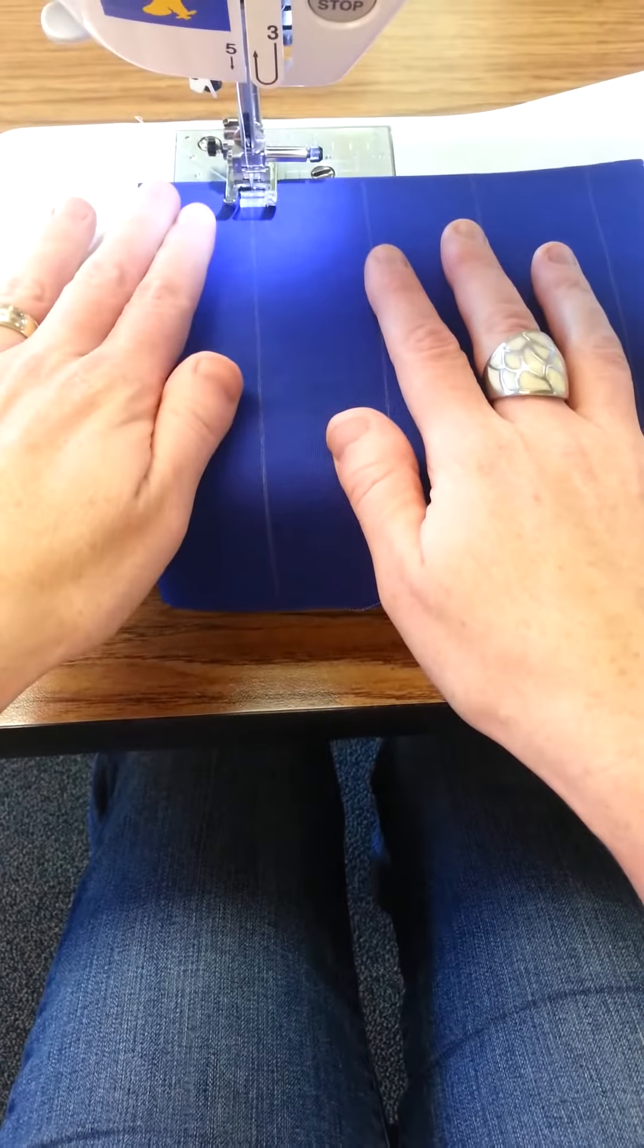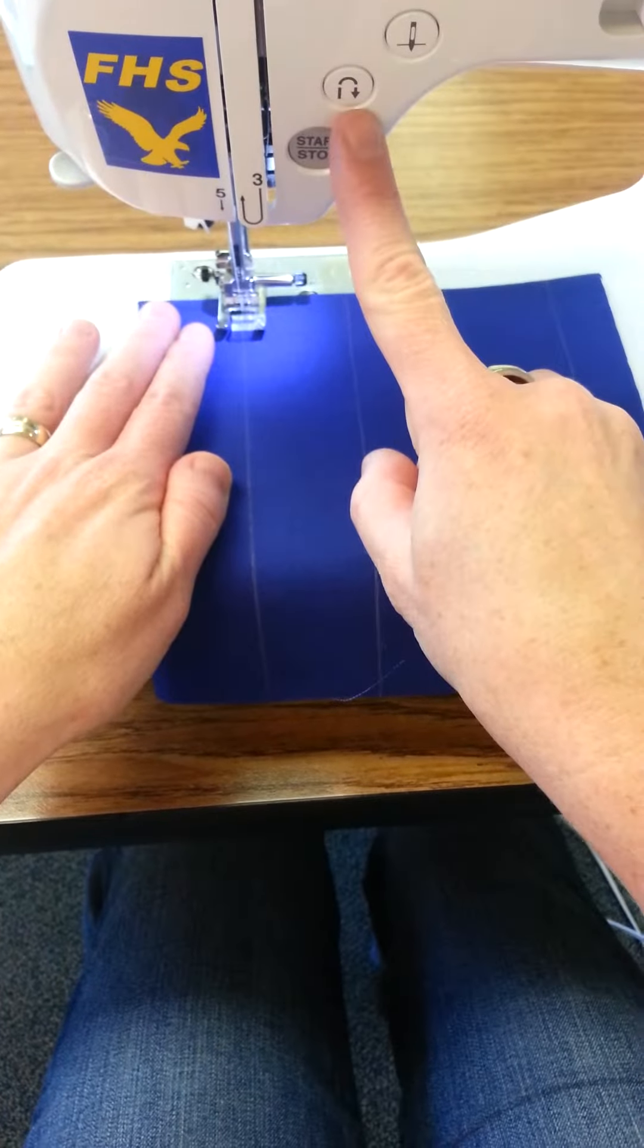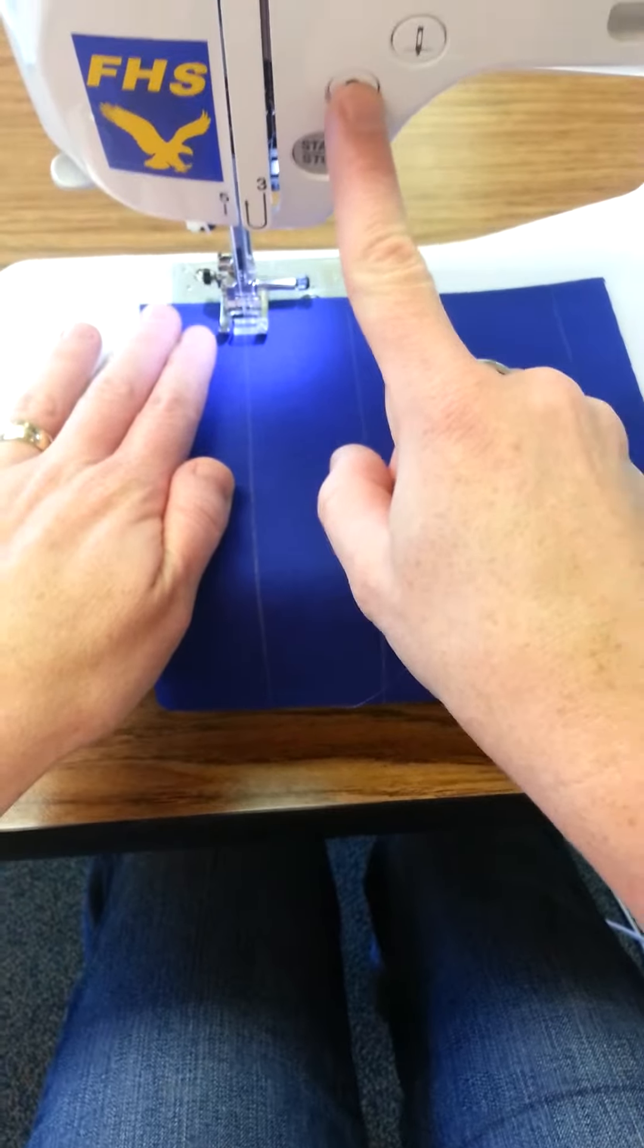So you're going to take a couple stitches forward, and then you're going to push this button right here - that is the backwards arrow - and hold that for a couple stitches. Then go ahead, let go, and you're going to just sew.